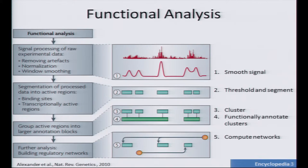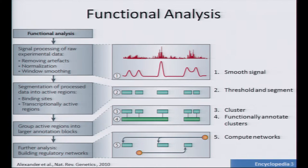To do functional annotation, there's a very nice analogy made by a paper co-authored by Snyder and Gerstein. You can think of building functional annotations as doing signal analysis. You start with a raw signal, you smooth it, you normalize it, you threshold it, and then you start actually segmenting it and building up pieces with higher and higher amounts of information and data.